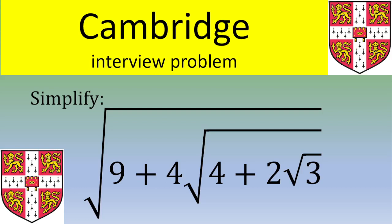Hello and welcome. In this video, we tackle an exercise given during an interview in Cambridge. The exercise asks you to simplify this quantity: square root of 9 plus 4 times the square root of 4 plus 2 square root of 3. If you want to give it a try, please pause the video.